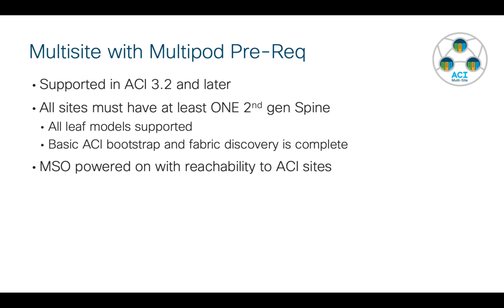All of your sites need to have at least one second generation spine, but it doesn't matter what leafs you have - all models are supported. We assume that you've already done the ACI bootstrap and basic fabric discovery, all done ahead of time. You've deployed your MSO cluster, it's powered on and has basic IP reachability to all of your ACI sites.